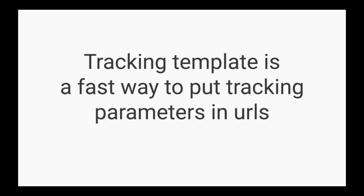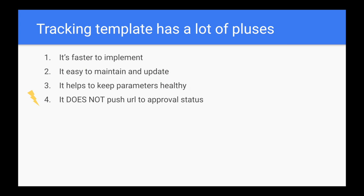The tracking template is a fast way to put tracking parameters in URLs. The cool part is that you just set up what you want to put and in which order. And it can be not only UTM params — it can be anything at all you want to put there. For example, you might want to pre-define currency on your site or pre-define locale on your site. If you have a parameter for that, you can use tracking templates.